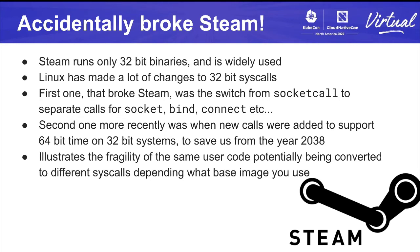Worse than breaking Emacs, I also broke Steam — not on purpose. Linux has made a bunch of changes to the 32-bit ABI, and Steam happens to run 32-bit binaries and is widely used in containers. Debian had a habit of making these changes first — they switched from the old socketcall syscall (a weird multiplex syscall) to separate syscalls, and we hadn't allowed for this change. They did the same thing with 64-bit time support on 32-bit systems, switching early before it was officially upstream. These were all temporarily blocked by Seccomp until we fixed the problem.